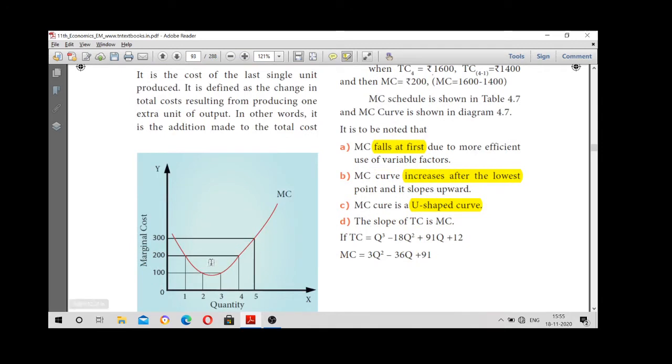Nature of the curve is U-shaped curve. 300, 200, 100 and increase. So it is a U-shaped curve.